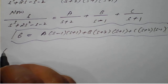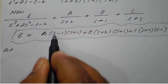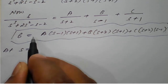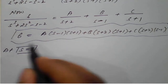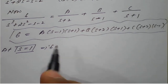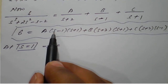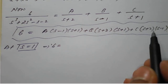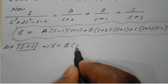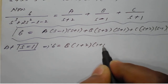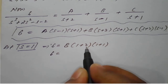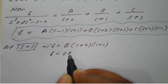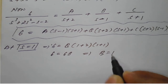To find B, put S equal to 1 so that the A and C terms vanish. This gives 6 equals B times 1 plus 2 times 1 plus 1, which is B times 3 times 2, equals 6B. Therefore B is equal to 1.